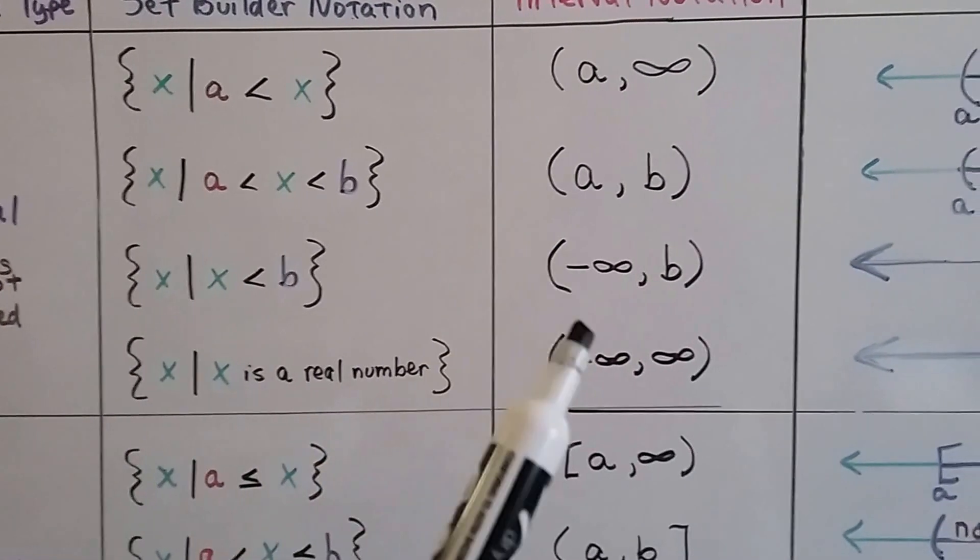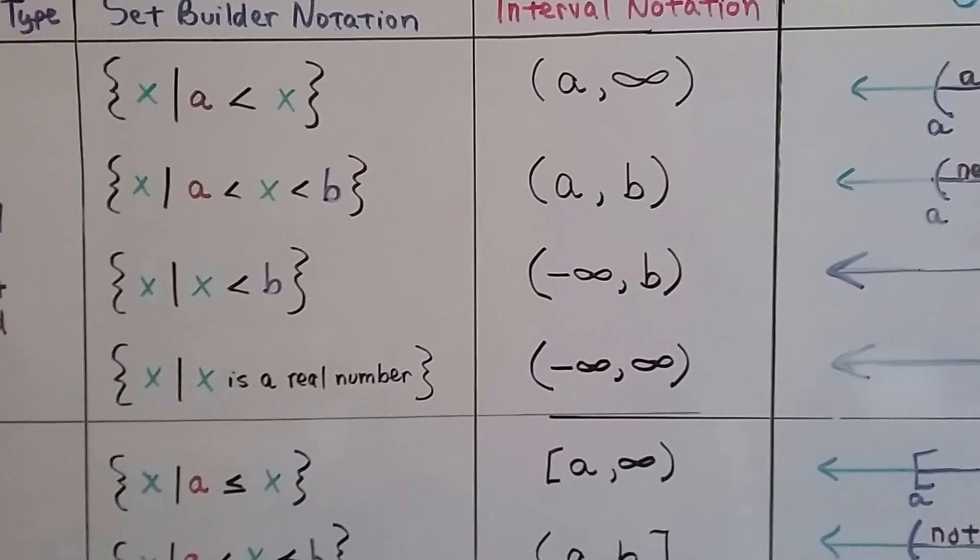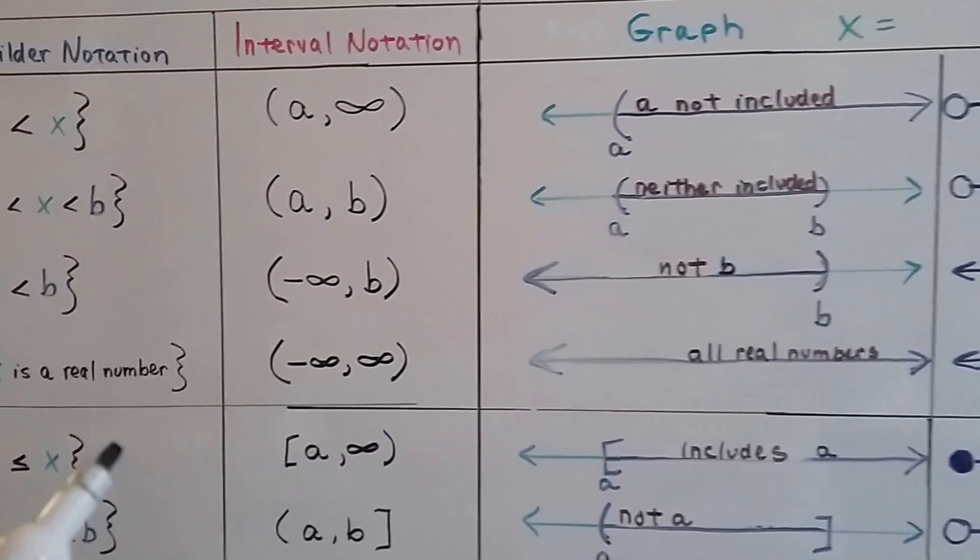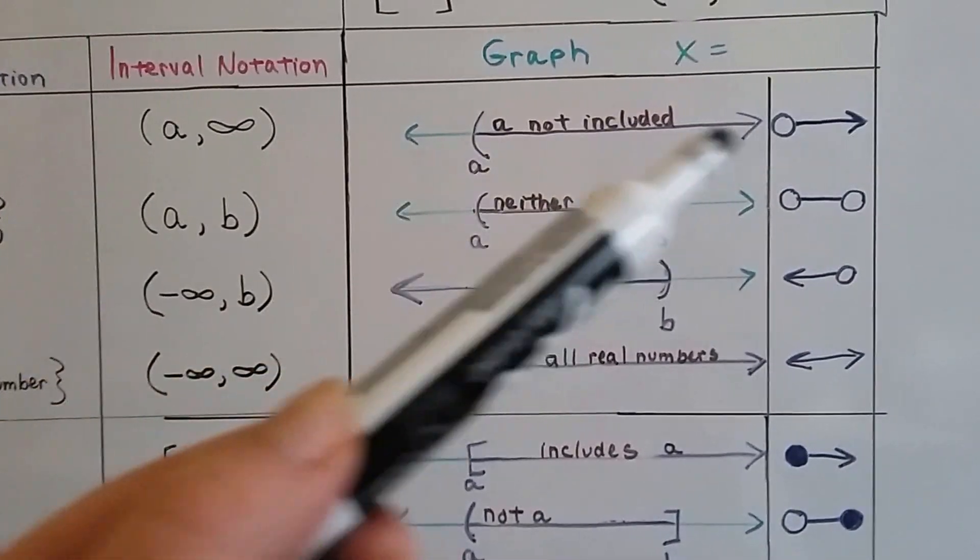And because the numbers are not included, they've got parentheses around each side for the interval notation. And this is why I said interval notation translates to the graph very easily. If a has a parentheses next to it, that's how it's graphed.